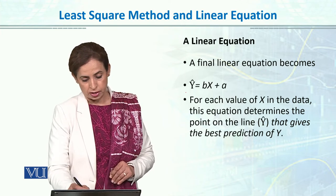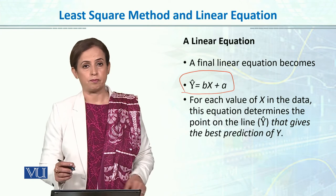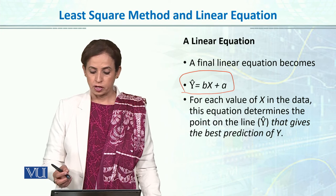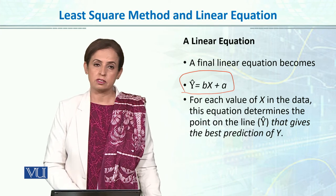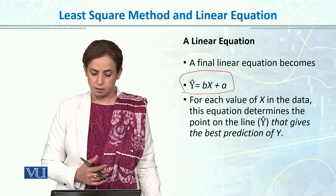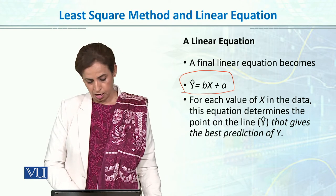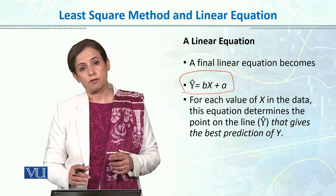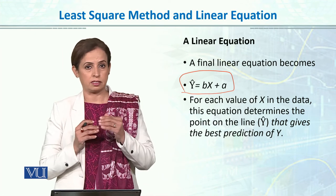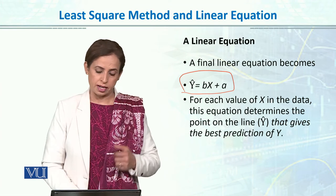Using that method, we form our linear equation. The linear equation for predicting y will be a plus bx. For each value of x in the data, the equation determines the point on the line of y that gives the best prediction of y. Let's do an example and see how we calculate the predicted score, the distance between actual and predicted, and how we draw the line of best fit.